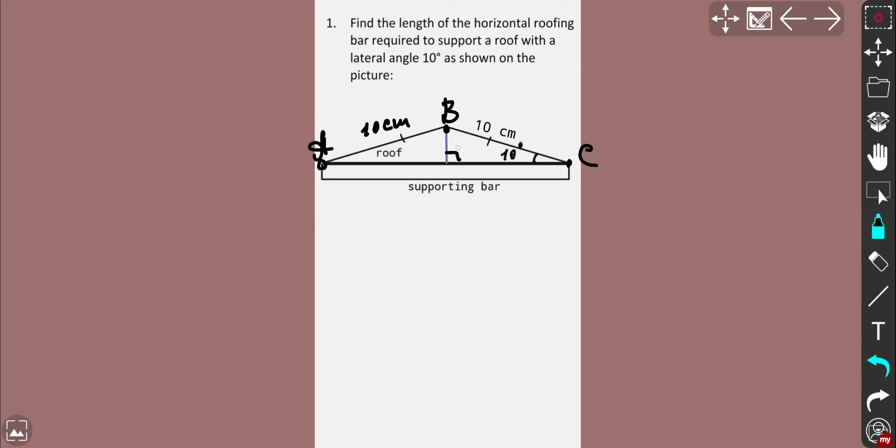So this height is going to be also a median, a bisector for the segment AC. So what we're going to do, we just need to mark the unknown side. Because we need to find the length for AC, that's the supporting bar, we can say that we're looking for the half which is x, and so AC is going to be simply 2x.